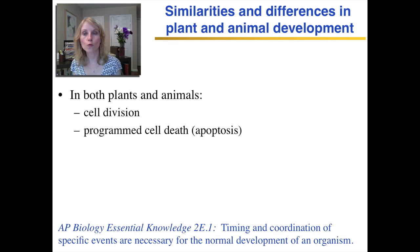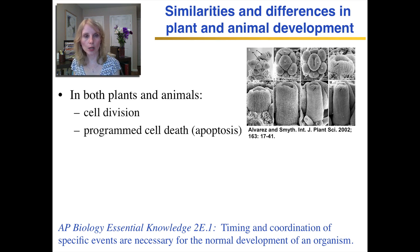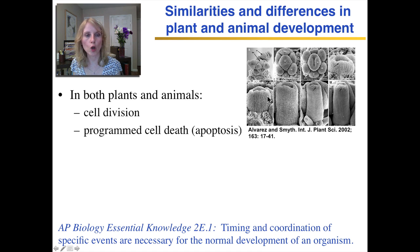Let's go over some of the similarities in plant and animal development. In both plants and animals, you get cell division for growth. Here's an example in plant development where you have little baby flowers growing. Here's one flower developing, and here's the carpal in the middle — you can see the carpal is getting longer and longer through cell division, and here's just the stigma just beginning to form.